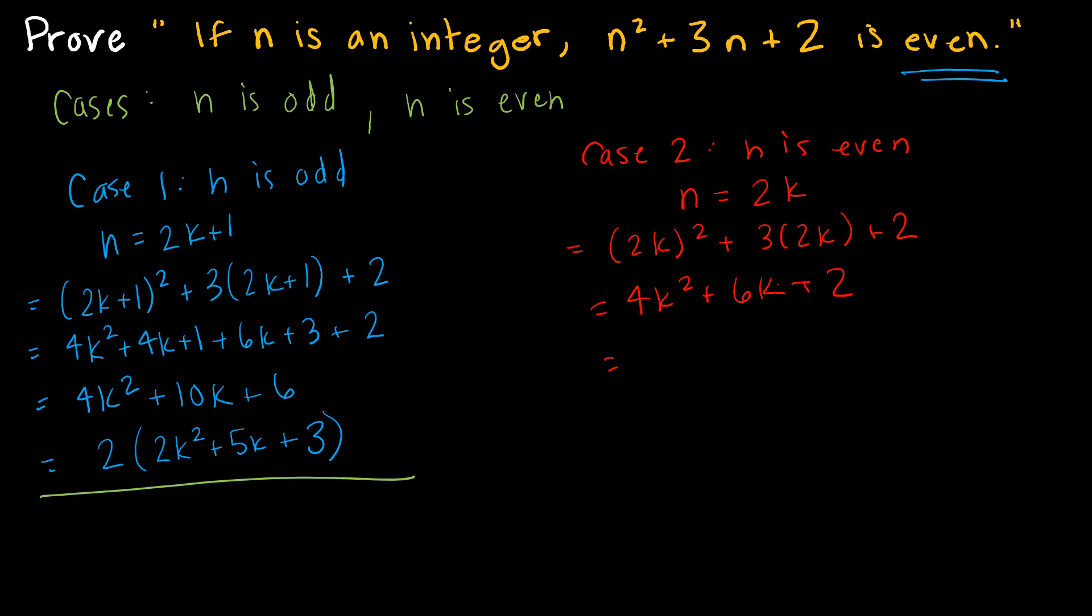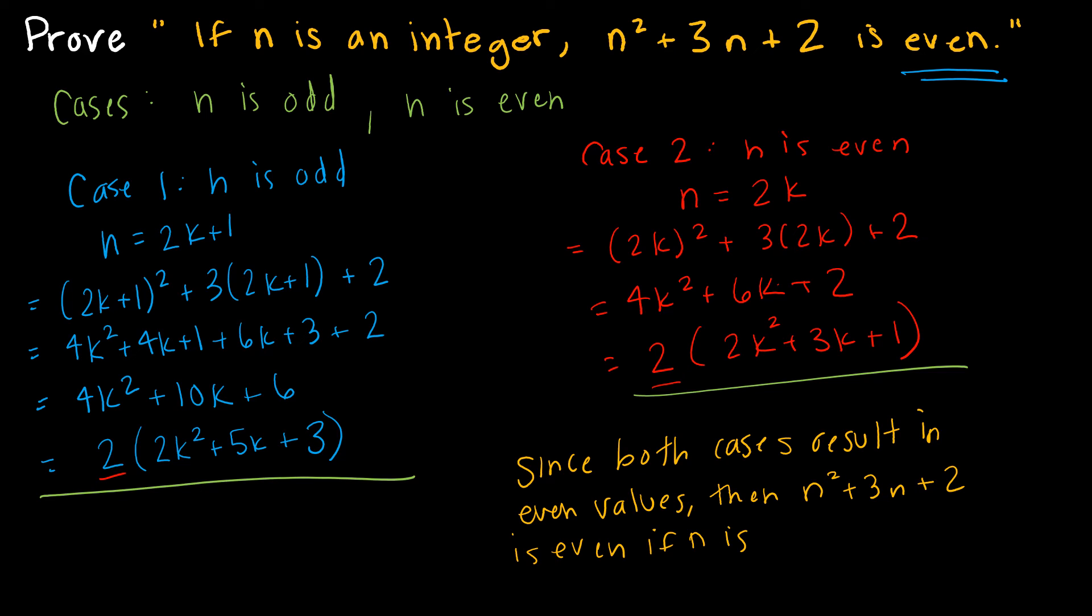I can rewrite this as 2 times 2k squared plus 3k plus 1. And I can see that again, because of the two, same thing that happened over here, that this is an even expression. So since both are even, since both cases result in even values, then n squared plus 3n plus 2 is even if n is an integer.